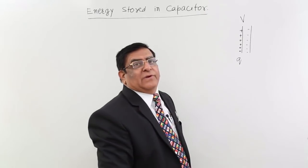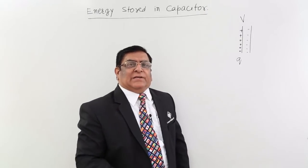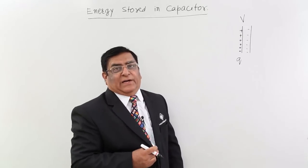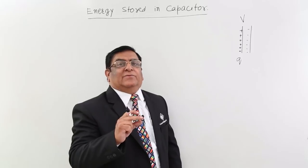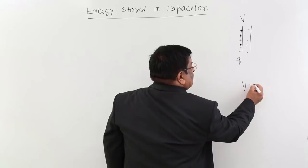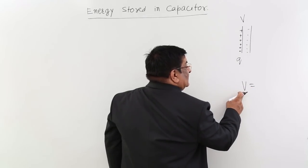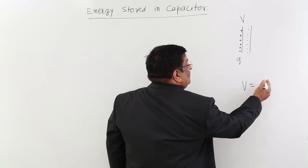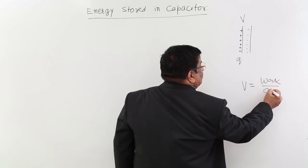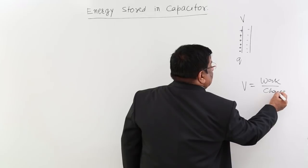Now, how do I calculate work done? The answer is in electricity, whenever you have to calculate work done, you have to do it with potential. Because initially we made this concept of potential by the formula work done on a unit charge, work upon charge.